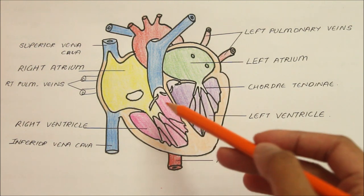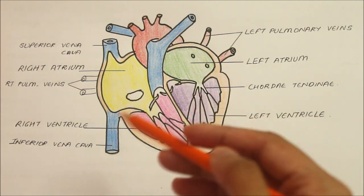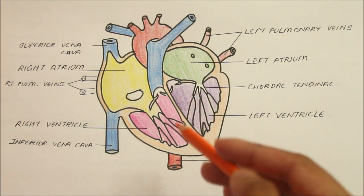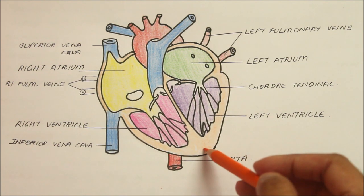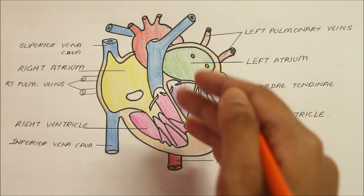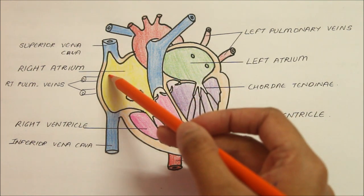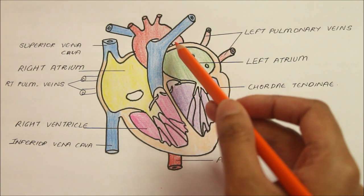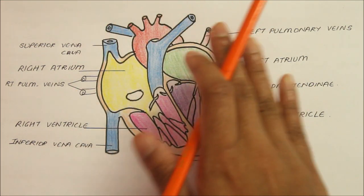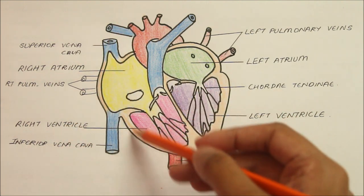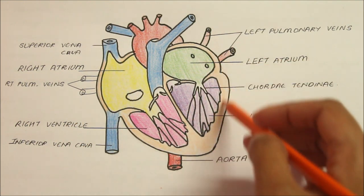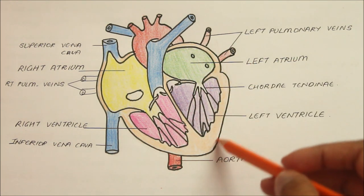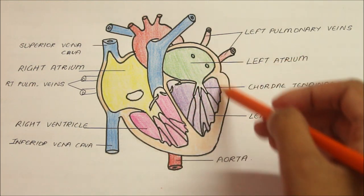The ventricles are separated on the outside by a groove called the interventricular groove. The heart has an apex directed downwards, forwards and to the left. It has a base directed backwards, which is the posterior surface. It has surfaces: the anterior or sternocostal surface, the inferior surface, and the left lateral surface. It has borders: the upper border, the inferior border, and the right and left borders.